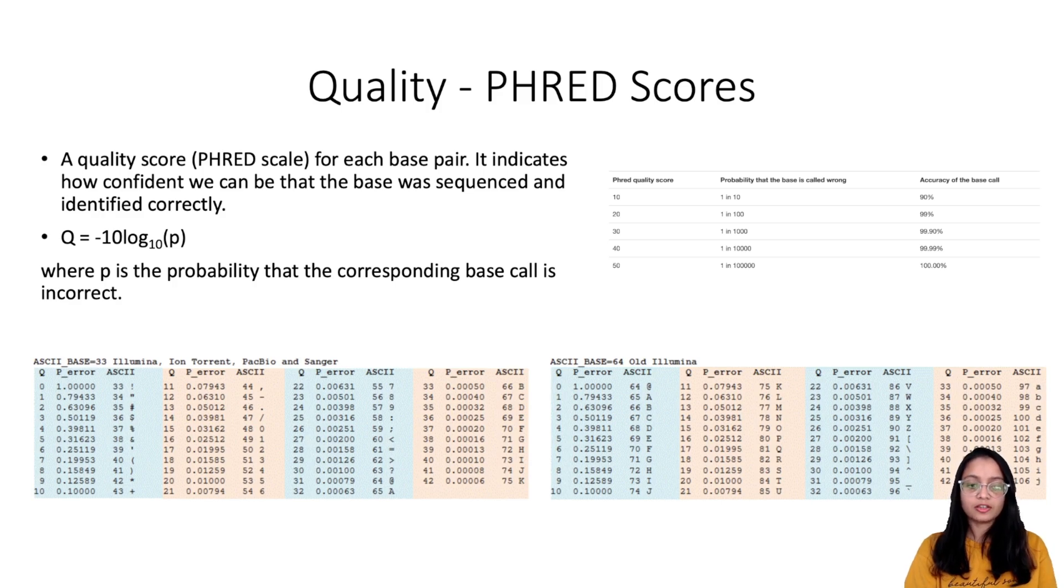In the table below, you can see as the quality scores increase, the probability of error decreases. Each quality score is associated with a character. That character is used to indicate the quality value for a particular nucleotide.